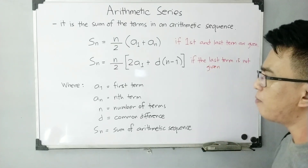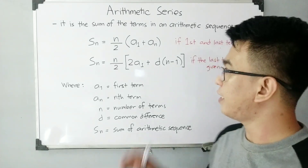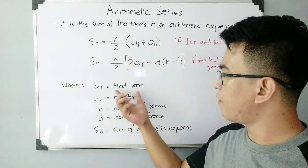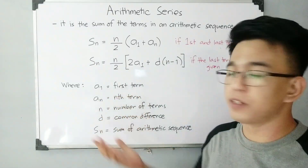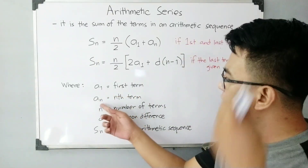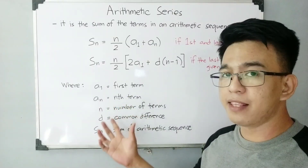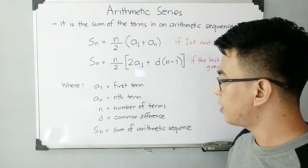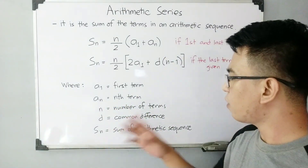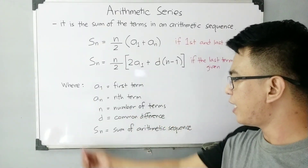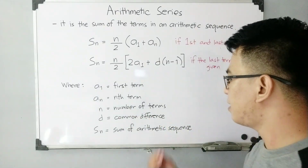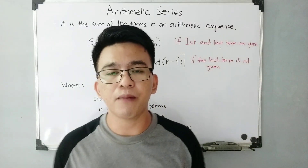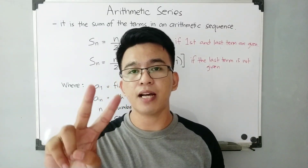Let me explain the different elements of our formulas. A sub 1 is your first term, a sub n is the nth term, n is the number of terms, d is the common difference, and S sub n is the sum of the arithmetic sequence. In the next part of the video, I'll be giving you two examples using the different formulas.